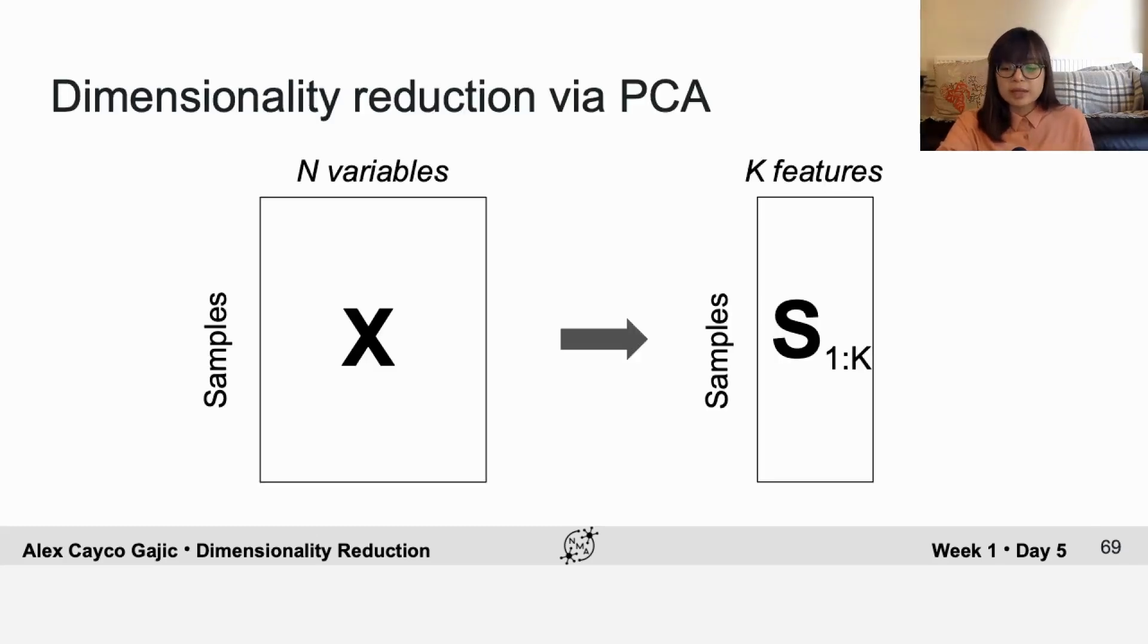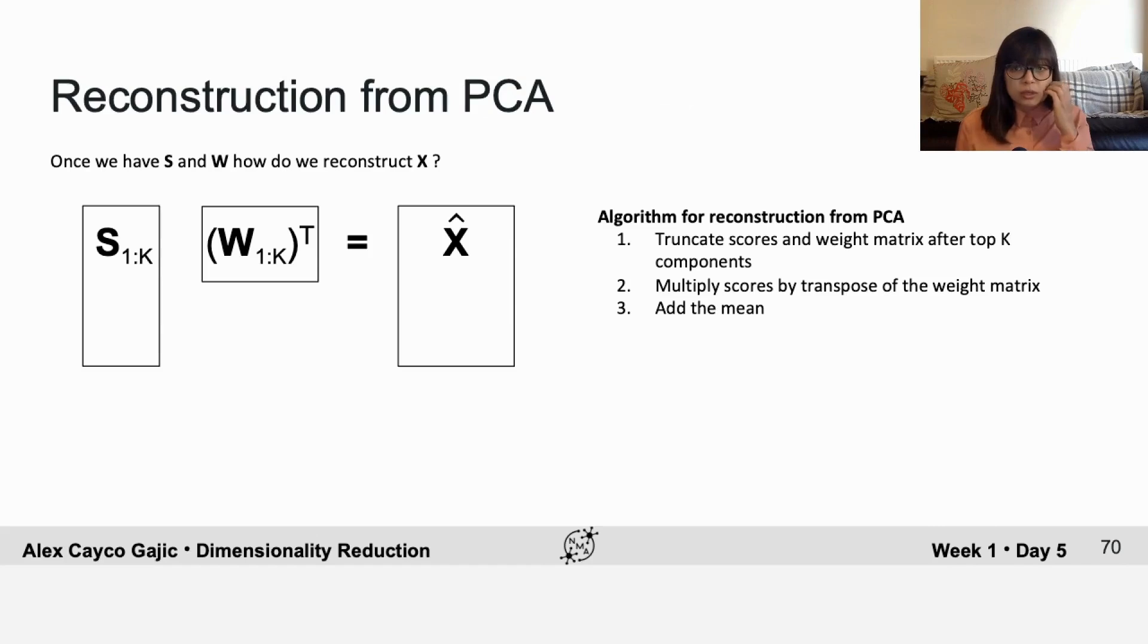But you might be thinking, hang on, the whole point of doing PCA was to reduce the dimensionality. So can you reconstruct the data using the low dimensional representation that you have built? And you can do this by truncating the scores and the weight matrix after the top k components, multiplying them, and again adding the mean.